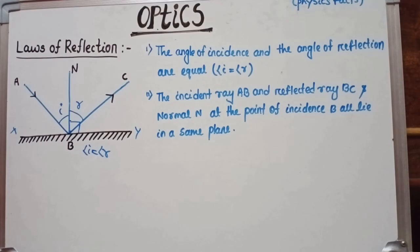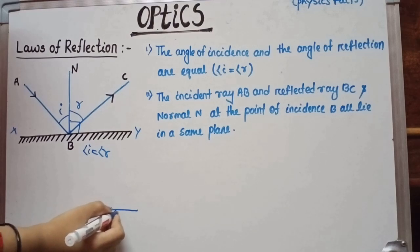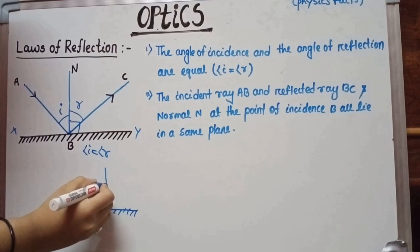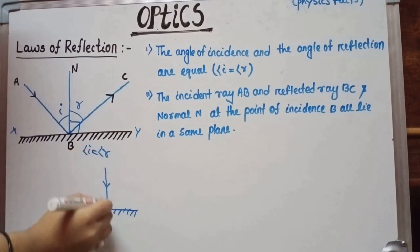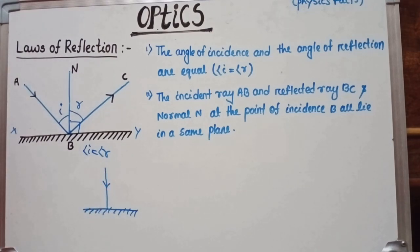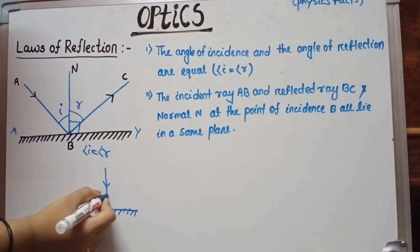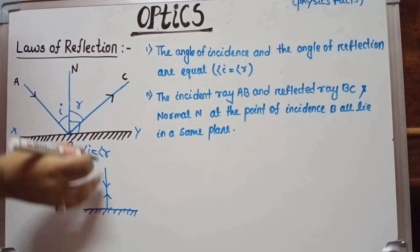If the incident ray is perpendicular to the surface — that means the incident ray is along the normal — then there is no deviation. The reflected ray returns in the same direction as the incident ray.